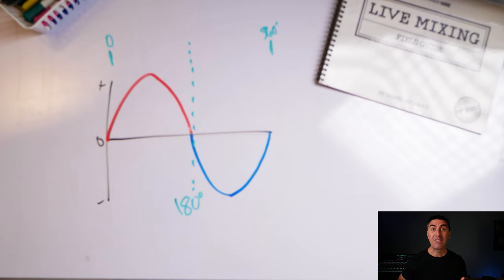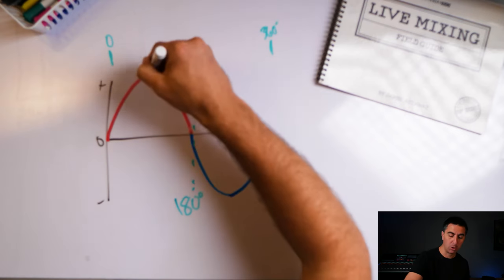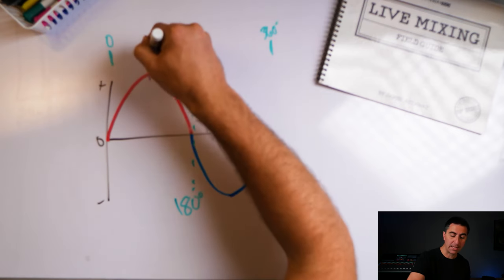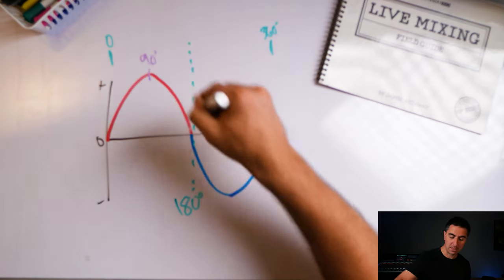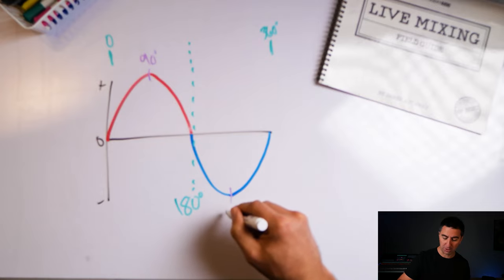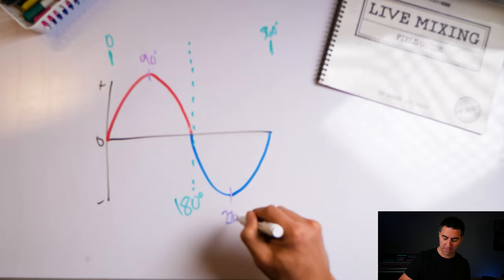Right in the middle we have 180 degrees — this is where the wave has completed the high pressure zone and is now moving into the low pressure zone. At the very top of the high pressure zone we call that 90 degrees, and at the very bottom of the low pressure zone, 270 degrees.